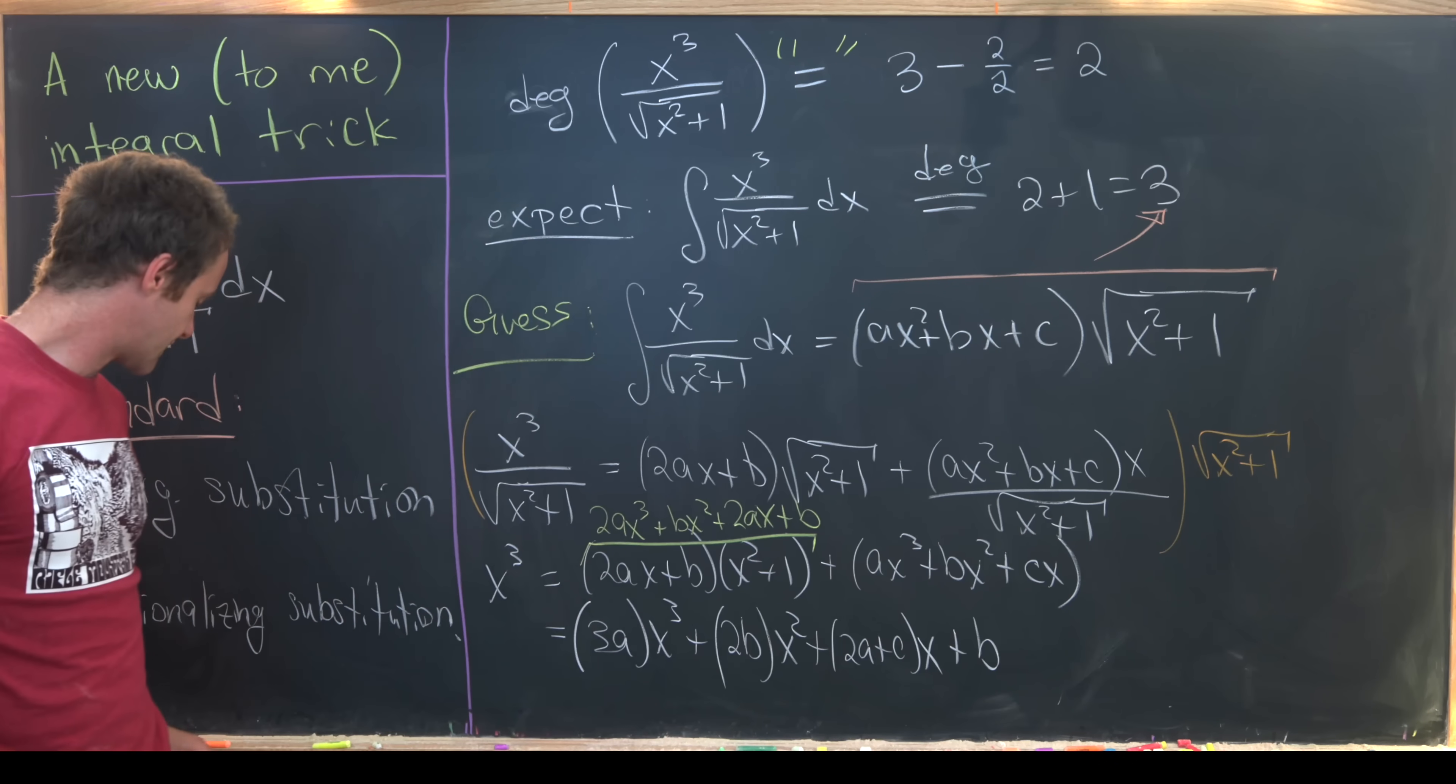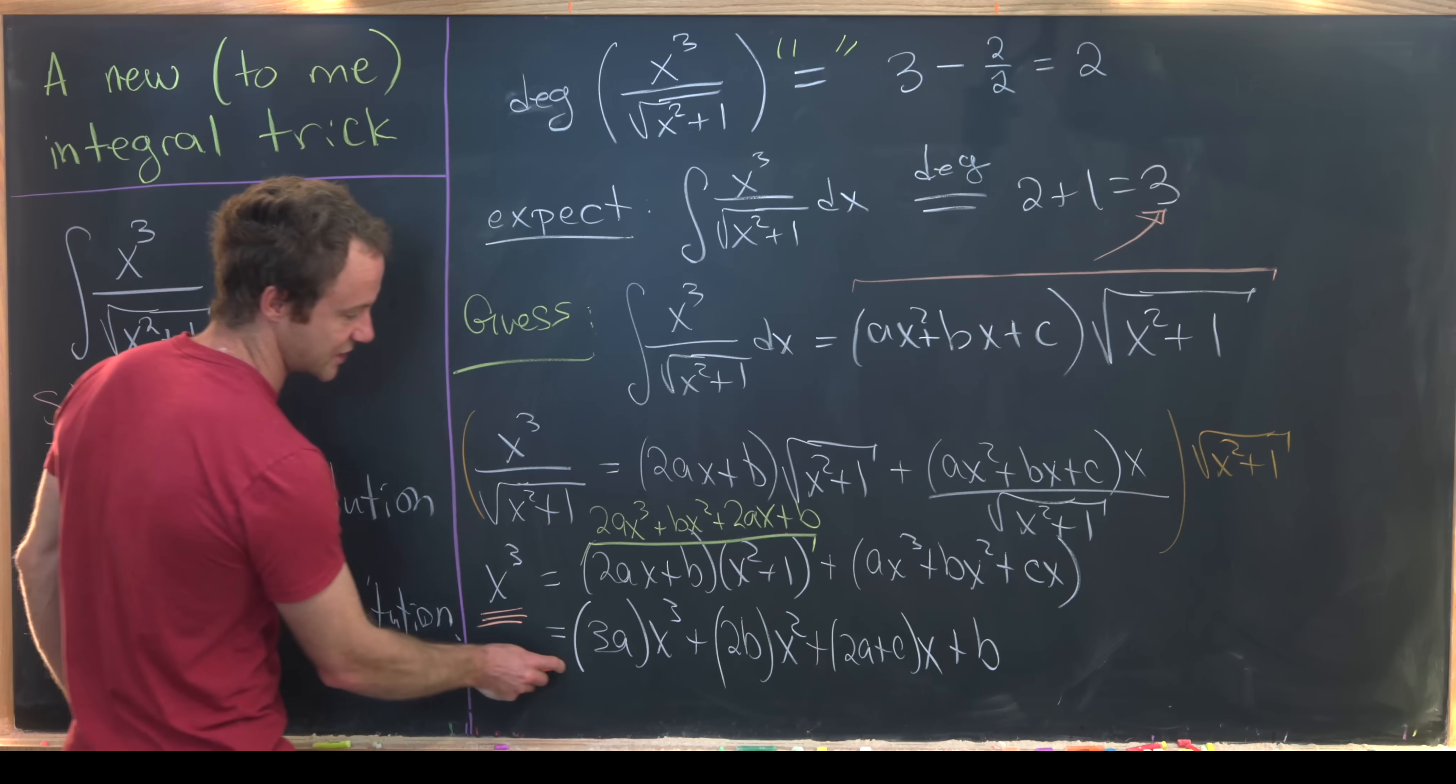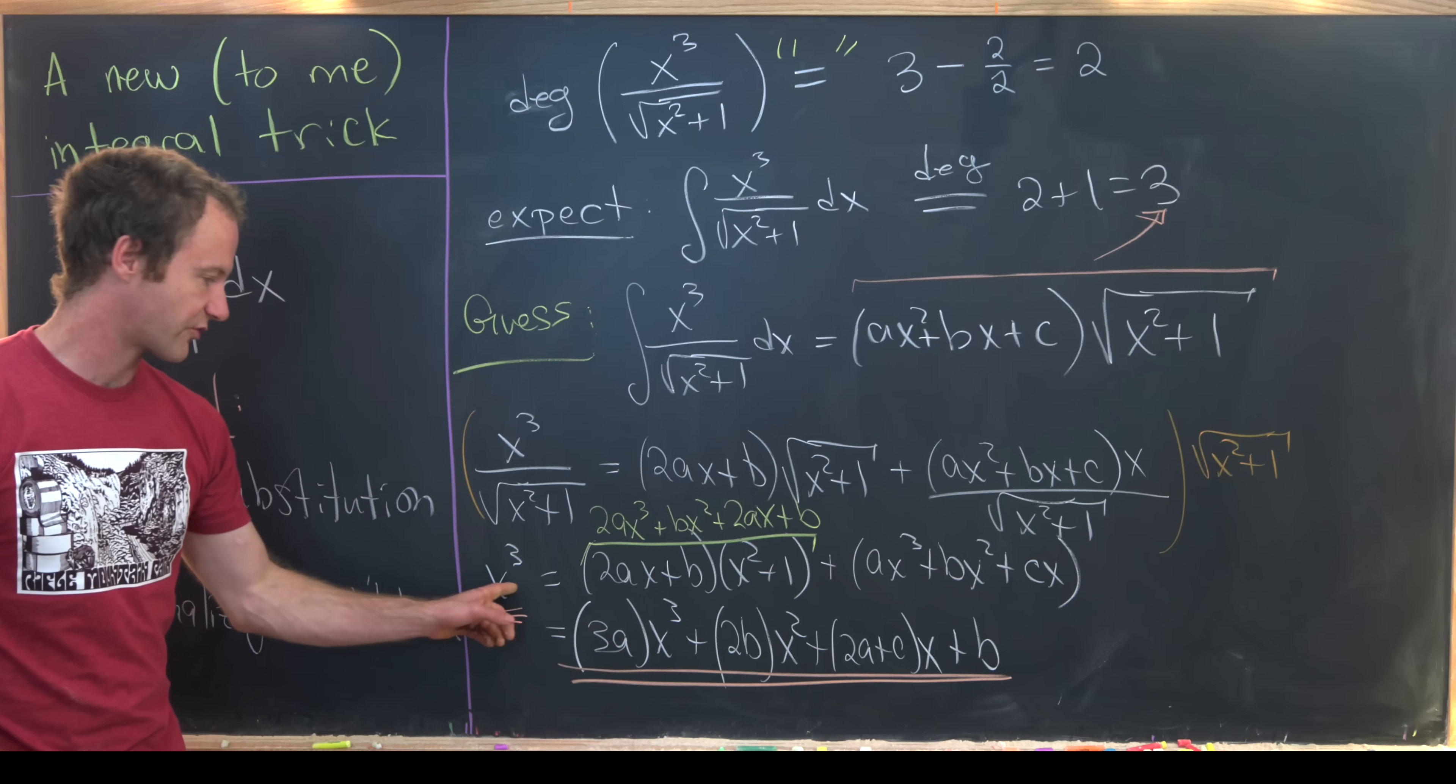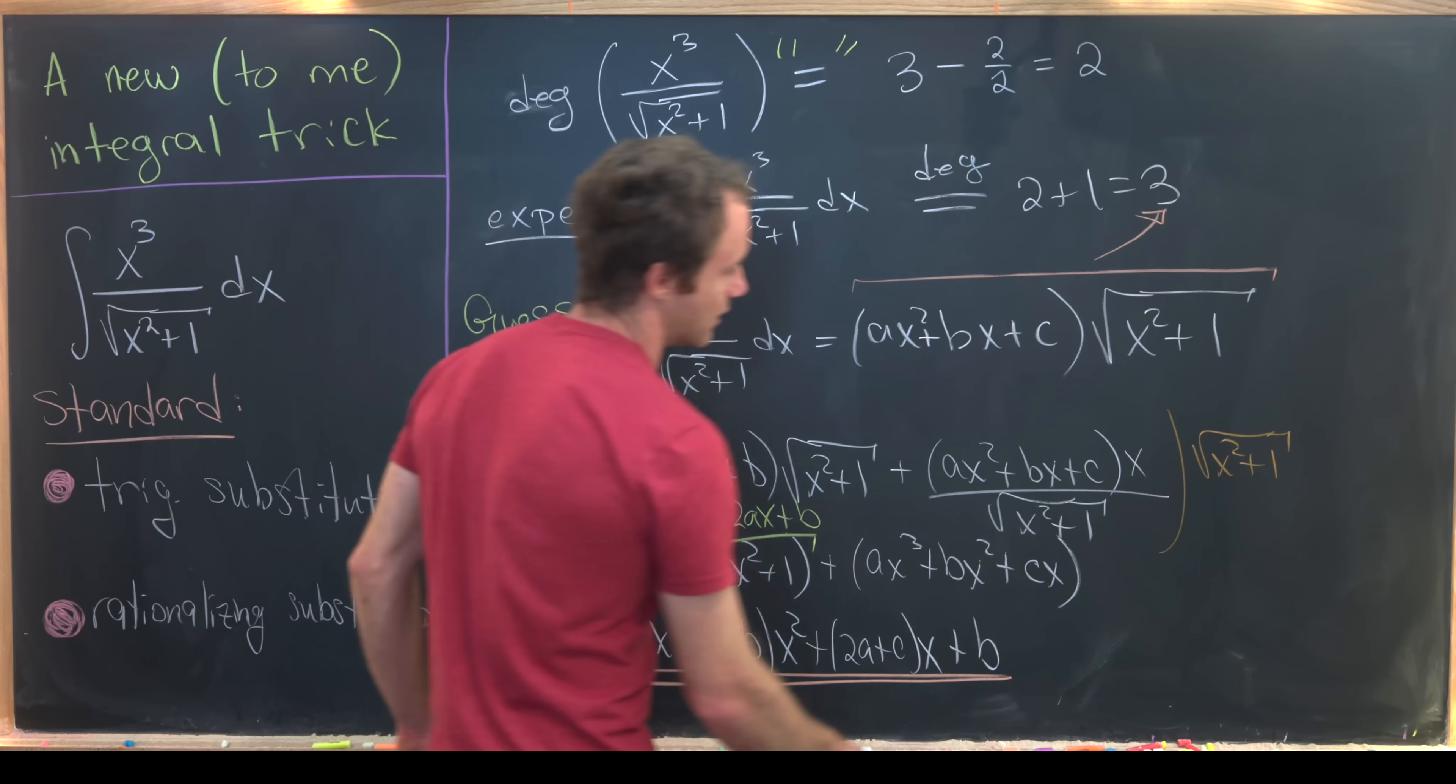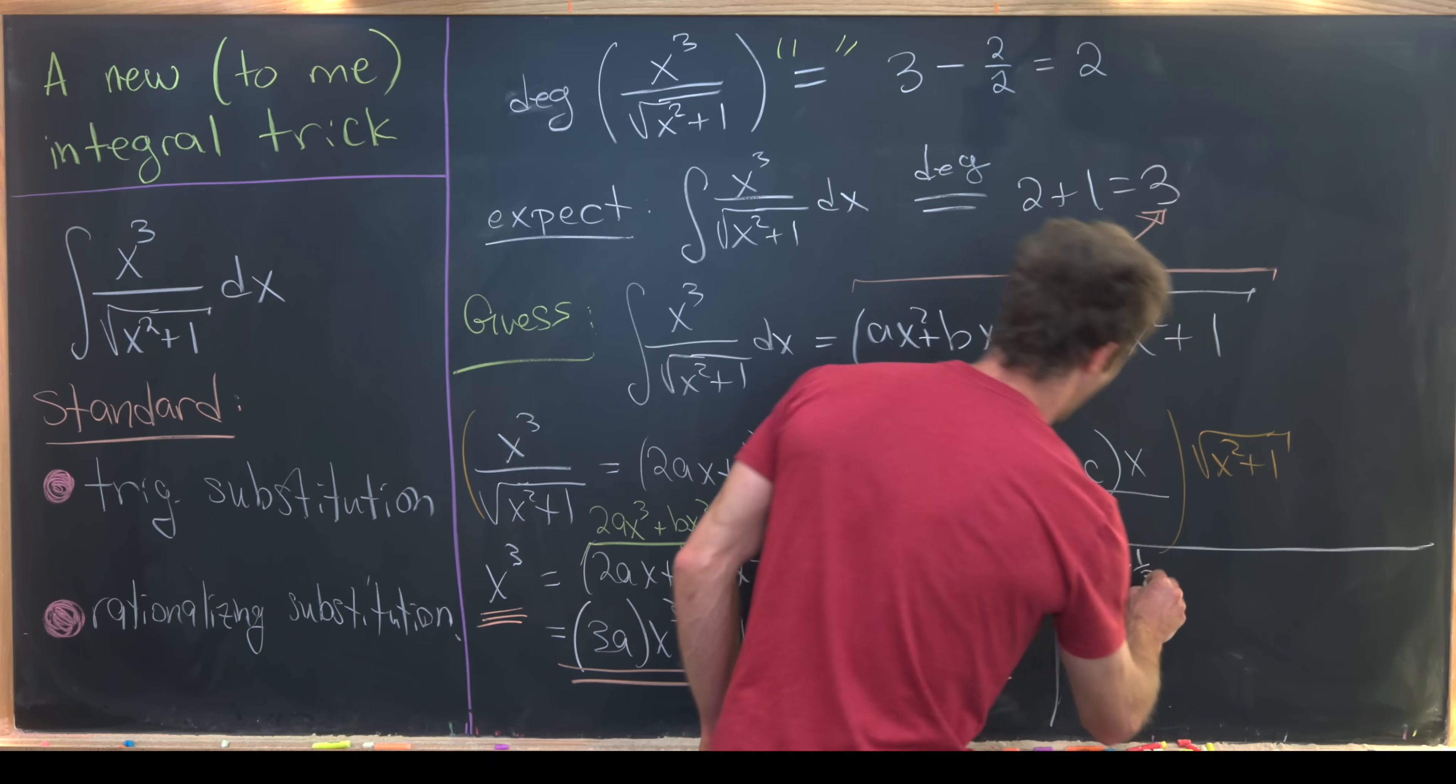Great. But now we can compare the left-hand side with the right-hand side. So notice this x cubed must be equal to this thing right here. But that means that our 3a must be equal to 1. So putting that together that means our a must be equal to 1 third.